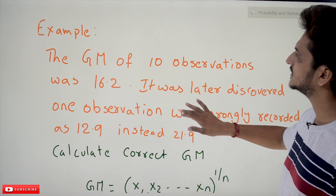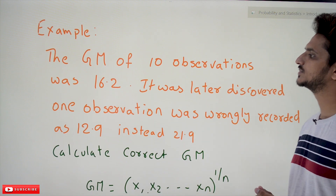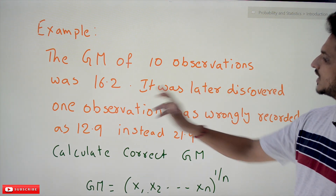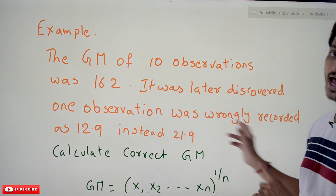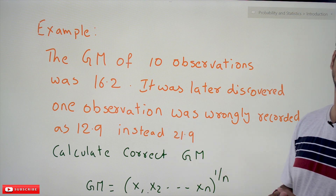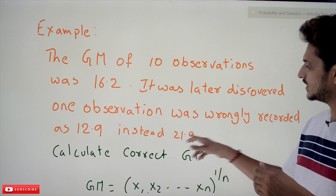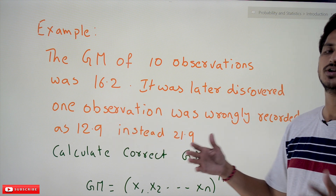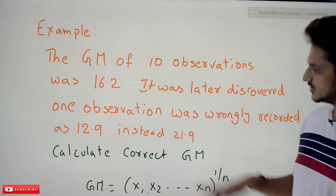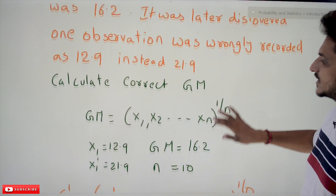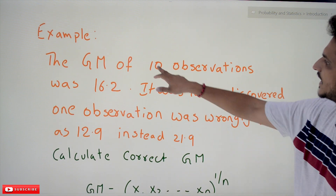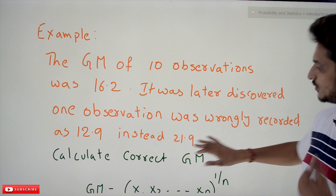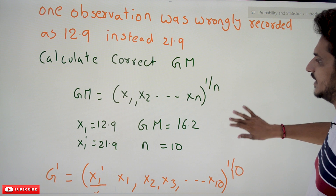Now we do one practice example. The geometric mean of 10 observations was 16.2. It was later discovered that one observation was wrongly recorded as 12.9 instead of 21.9 — the actual correct value is 21.9. Calculate the correct geometric mean, given that 10 observations were taken and the geometric mean calculated was 16.2.